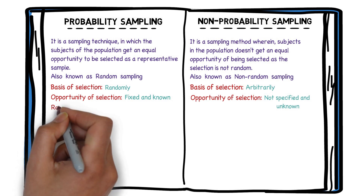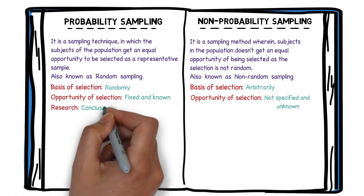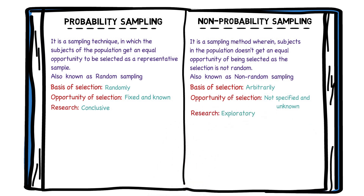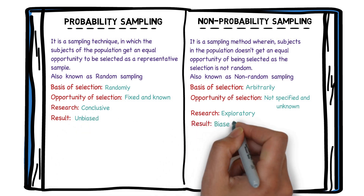Probability sampling is used when the research is conclusive in nature. On the other hand, when the research is exploratory — like we need to explore something — then non-probability sampling should be used. As subjects are selected randomly in probability sampling, the extent to which it represents the whole population is higher compared to non-probability sampling. That is why exploration of results to the entire population is possible in non-probability sampling, but not in probability sampling. The results generated by probability sampling are free from bias, while the results of non-probability sampling are more or less biased.